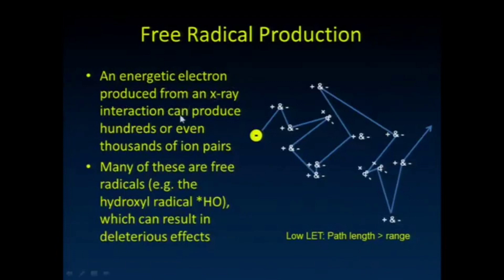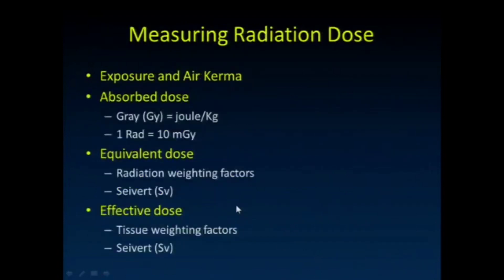Those energetic electrons produced, we've mentioned the fact that they can produce many, many thousands, hundreds of thousands of ion pairs. And because the body is composed of a lot of water, a lot of those are hydroxyl radicals (OH-), which can have quite a deleterious effect there.